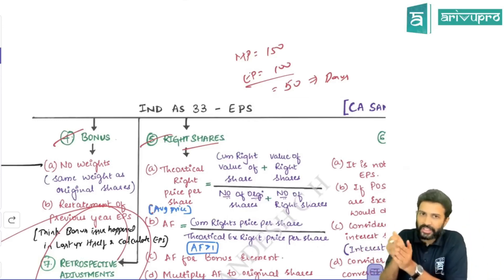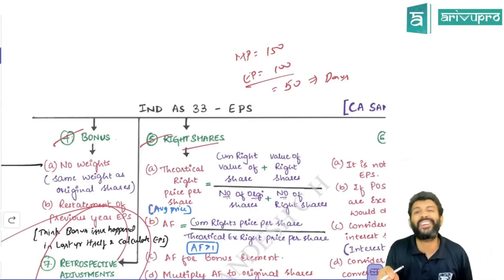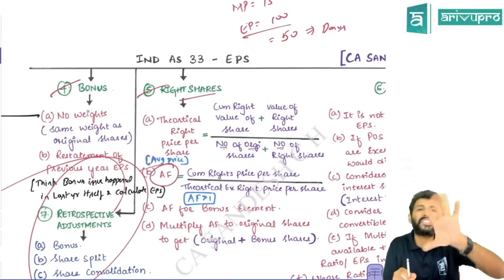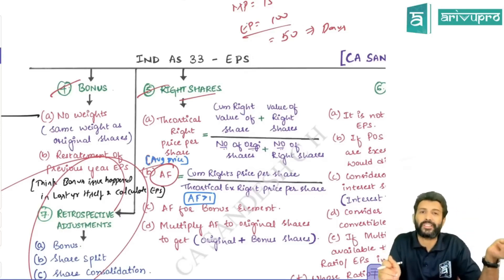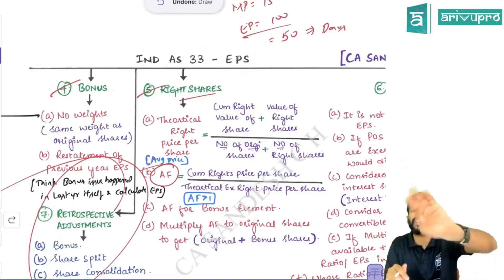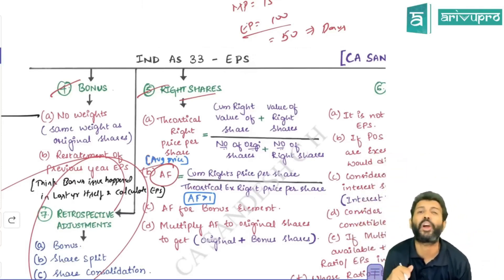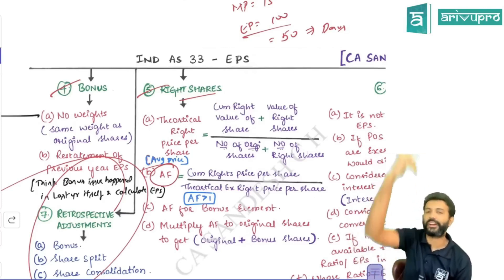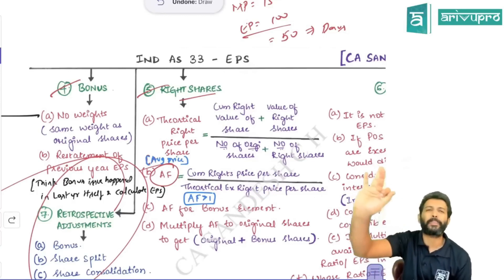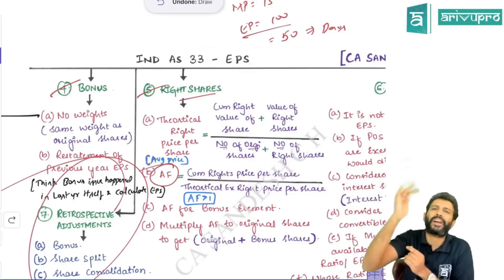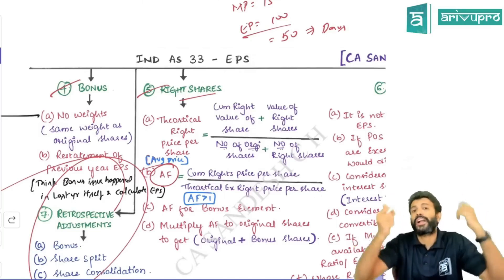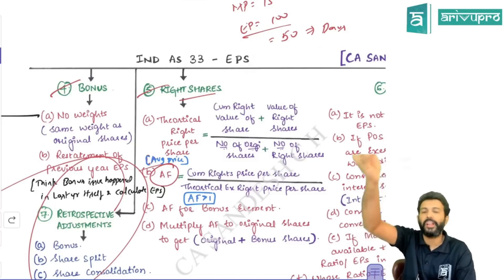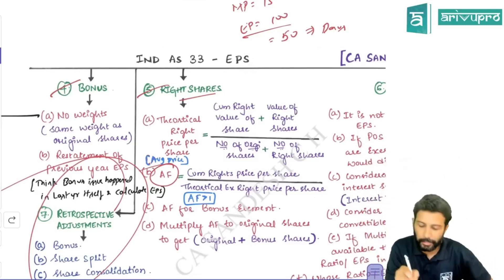Since right shares have a bonus element, we calculate something called the adjustment factor. This adjustment factor should always be greater than one. Mathematically, numerator must be greater than denominator. The come-right price per share — the market value of the share before the rights issue — should be in the numerator, divided by the theoretical ex-right price per share in the denominator. Doing this gives a number greater than one, which is your adjustment factor.